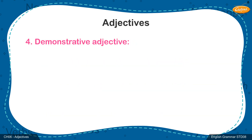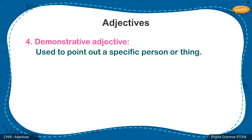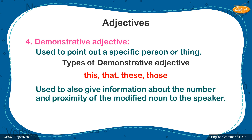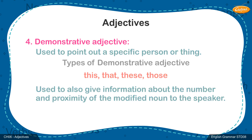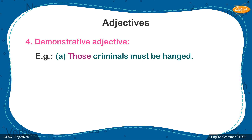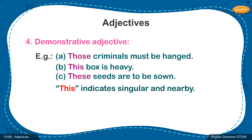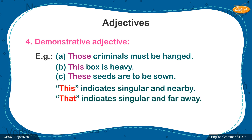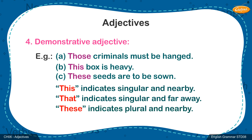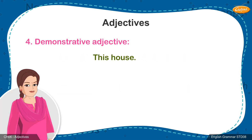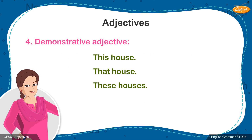The next type of adjective is the demonstrative adjective. It is usually used to point out a specific person or thing. There are four demonstrative adjectives: this, that, these, and those. They are also used to give information about the number and proximity of the modified noun to the speaker. For example: 'Those criminals must be hanged.' 'This box is heavy.' 'These seeds are to be sown.' 'This' indicates singular and nearby; 'that' indicates singular and far away; 'these' indicates plural and nearby; and 'those' indicates plural and far away. For example: this house, that house, these houses, those houses.